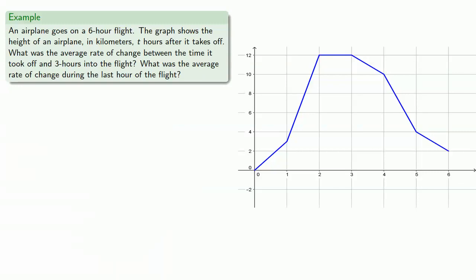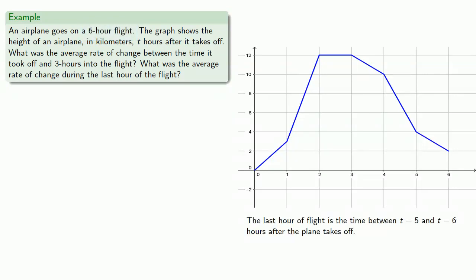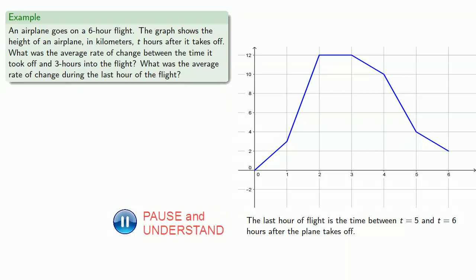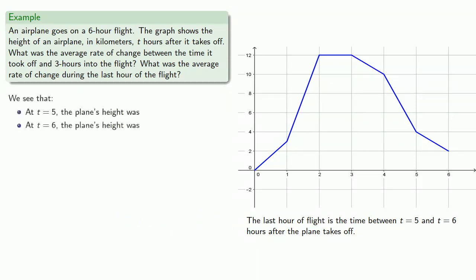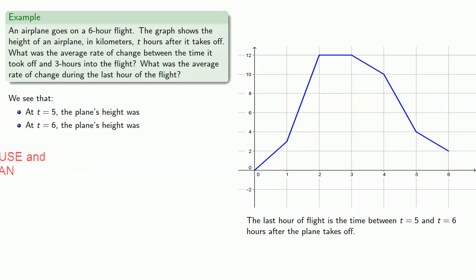How about during the last hour of flight? Since the flight was six hours, the last hour of flight is the time between t equals five and t equals six hours after the plane takes off. So we want to know the plane's height at t equals five and the plane's height at t equals six. And these are four kilometers and two kilometers.